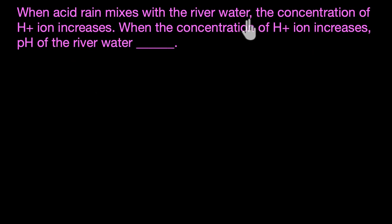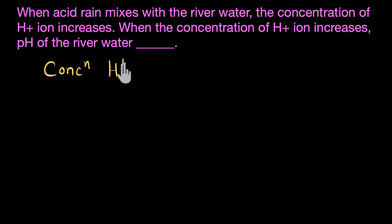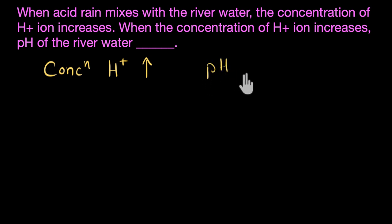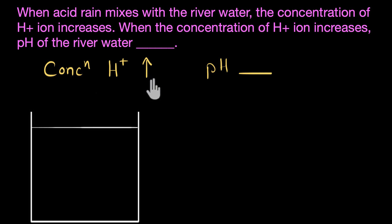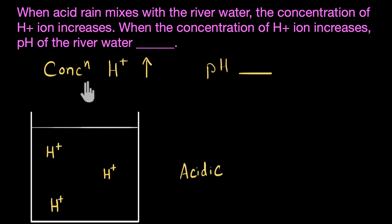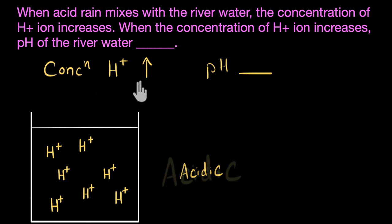When acid rain mixes with river water, the concentration of H⁺ ion increases. So the concentration of H⁺ ion is increasing. When the concentration of H⁺ ion increases, what is happening to the pH of the river water? We know that if a solution has excess of H⁺ ion, it is acidic. And if the concentration of H⁺ ion is increasing, meaning more H⁺ is present, the solution is becoming more acidic.